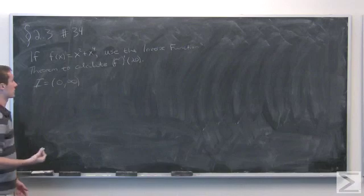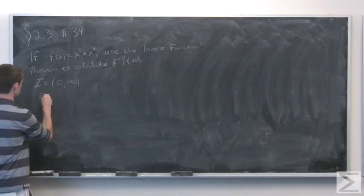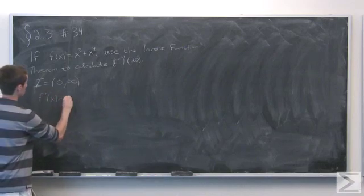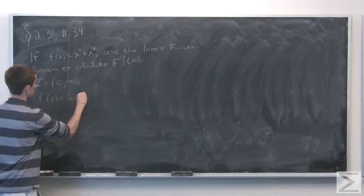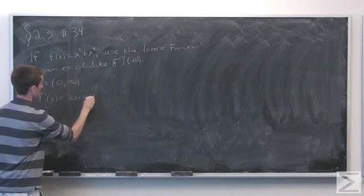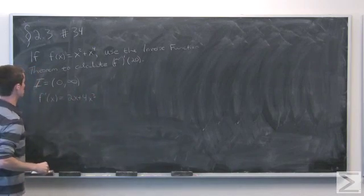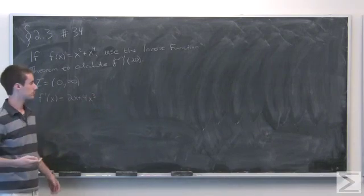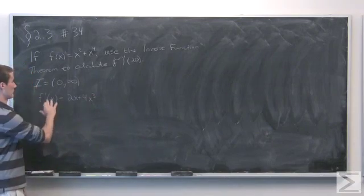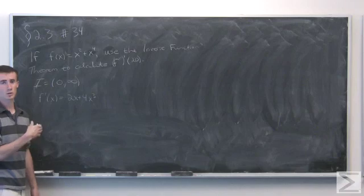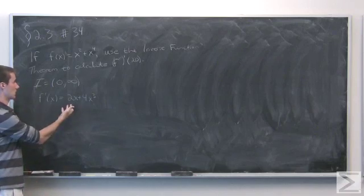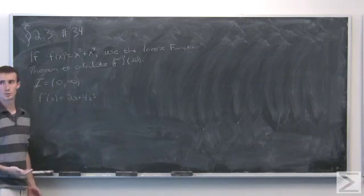Then we certainly have that since f'(x) is equal to 2x + 4x³, we see that we're taking only positive values here, so we're going to get only positive values here unless x is equal to 0.